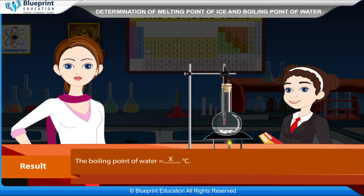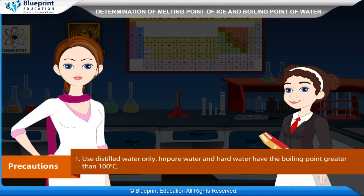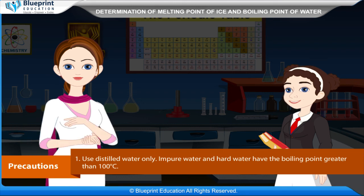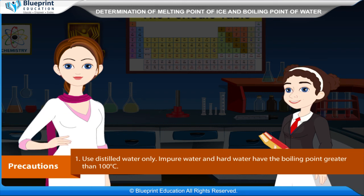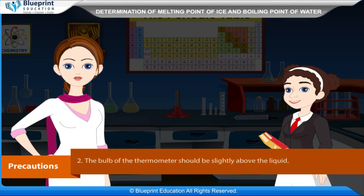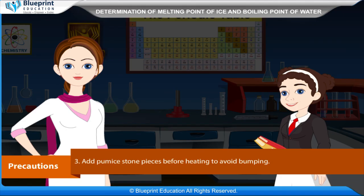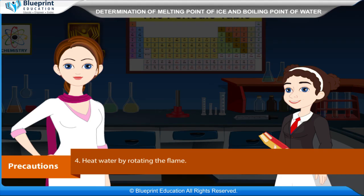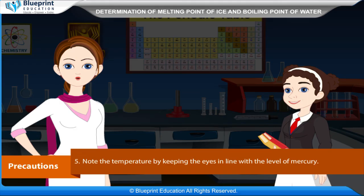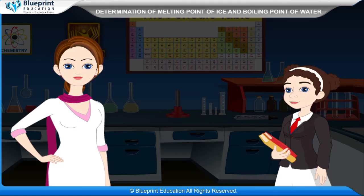Precautions: Use distilled water only, as impure water and hard water have a boiling point greater than 100 degrees Celsius. The bulb of the thermometer should be slightly above the liquid. Add pumice stone pieces before heating to avoid bumping. Heat water by rotating the flame. Note the temperature by keeping the eyes in line with the level of mercury. Thank you for this knowledgeable experiment.